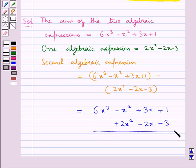Now as we need to subtract so we will change the sign of the second expression. So this becomes minus, this becomes plus, and this becomes plus again. And so this is equal to 6x³ would be written as it is. Then we have -x² - 2x² so it becomes -3x². Then 3x + 2x becomes +5x. Then 1 + 3 becomes +4.